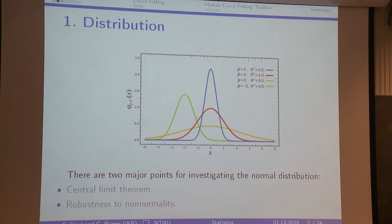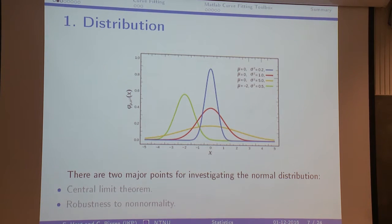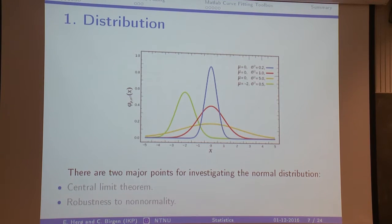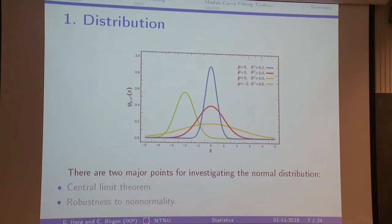Two of the main reasons for why we're interested in the normal distribution: the central limit theorem says that for a larger number of samples, what you've been sampling is normally distributed — even if it actually isn't, when you've sampled it enough times the sample becomes normally distributed. Also, a lot of the techniques that originate from this can be used for things that aren't normally distributed, which is often referred to as robustness towards non-normality.